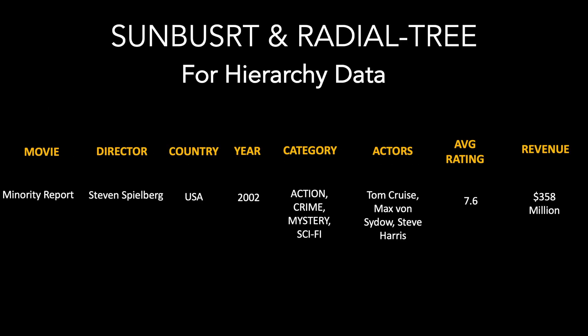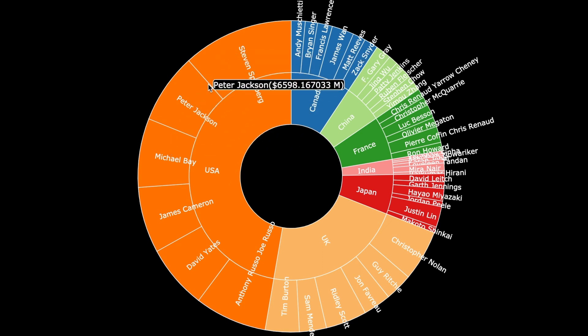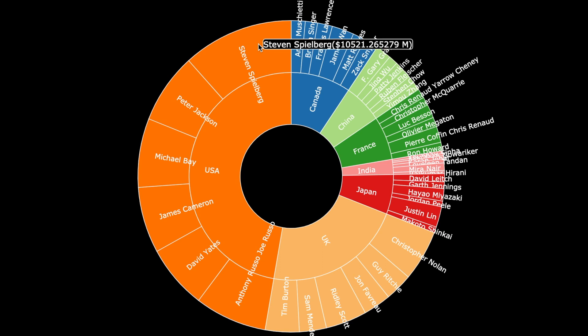Let us now talk about the sunburst and the radial tree visualization, which are very useful for hierarchy kind of data. If you look at the movie data, the country and the director can be thought of as a hierarchy. I will use these two fields in addition to the revenue field to illustrate both visualizations. Here is a sunburst visualization — data is organized in a hierarchical way. You have the countries and then the directors which belong to each country, and the size of the slice depends upon how much revenue the films of these directors are earning worldwide. As you can see, the US and UK dominate the movie market, and directors from these countries occupy most of the space.